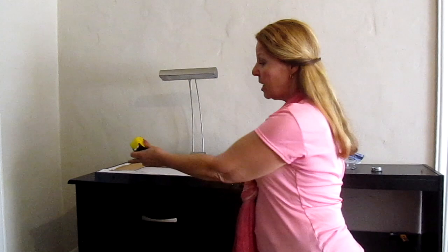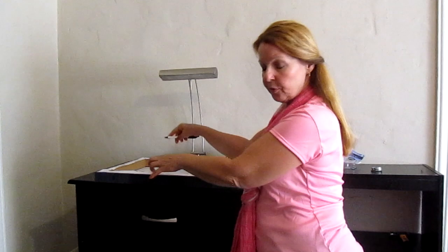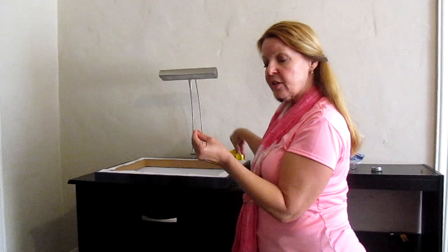Step one: measure down equally on either side, about in the top third of your painting, and put a little mark on either side. Then take the little D-ring and screw it in, one on either side.